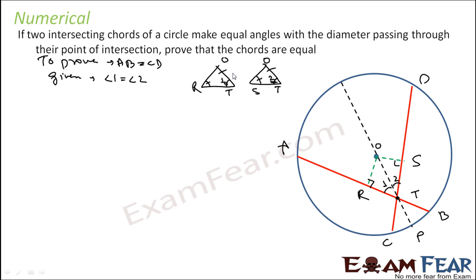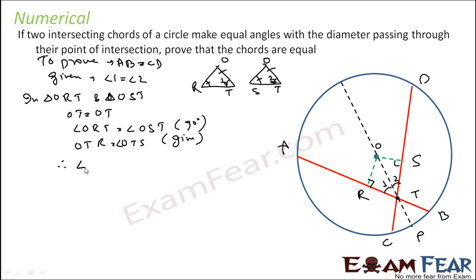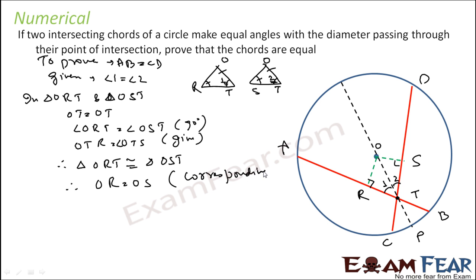With AAS we can say these two triangles are congruent. In triangle ORT and triangle OST: OT is common side; angle ORT is equal to angle OST (90 degrees by construction); angle OTR is equal to angle OTS (given). Therefore triangle ORT is congruent to triangle OST. Thus OR is equal to OS by corresponding sides.